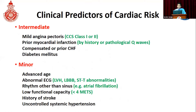Intermediate predictors also include compensated heart failure or history of heart failure, and diabetes mellitus. Minor risk predictors include advanced age, abnormal ECG findings such as LVH, left bundle branch block, ST abnormalities, rhythms other than sinus rhythm such as atrial fibrillation, low functional capacity of less than 4 metabolic equivalents, history of stroke, and uncontrolled hypertension.